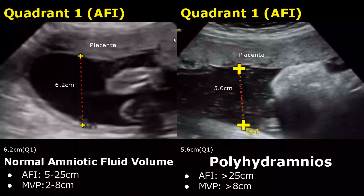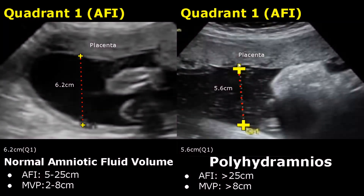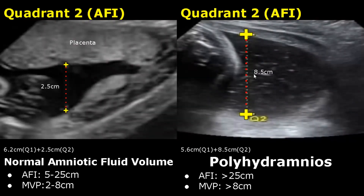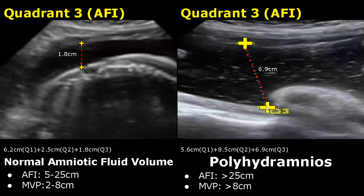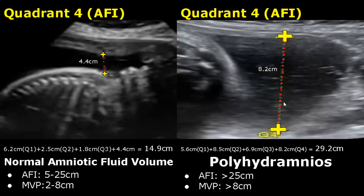Now we will see Polyhydramnios using the AFI method. The normal images are the same as previous ones. In this case of Polyhydramnios, quadrant 1 measures 5.6 cm, quadrant 2 is 8.5 cm, the third quadrant is 6.9 cm, and the fourth quadrant is 8.2 cm. The total sum of all four values is 29.2 cm, confirming Polyhydramnios because it is more than 25 cm.